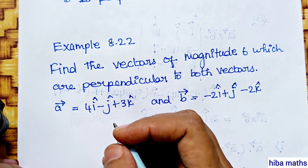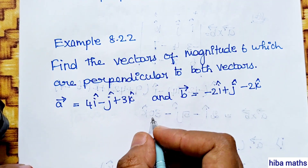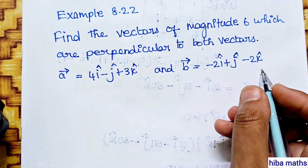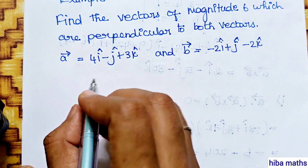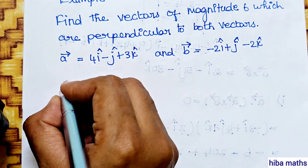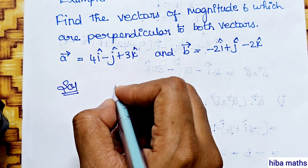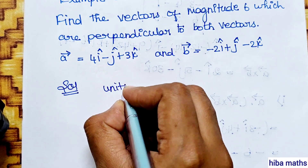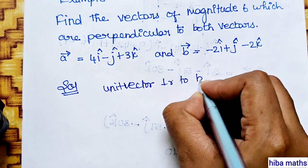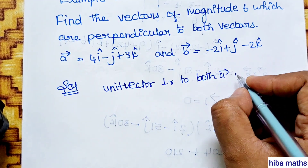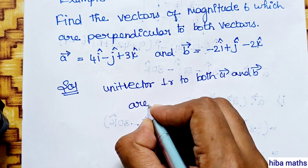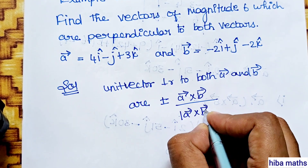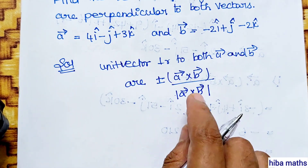Next question, example 8.22: Find the vector of magnitude 6 which is perpendicular to both vectors A vector equals 4i minus j plus 3k and B vector equals minus 2i plus j minus 2k. The unit vector perpendicular to both A vector and B vector is plus or minus A vector cross B vector divided by modulus of A vector cross B vector. This is the formula.